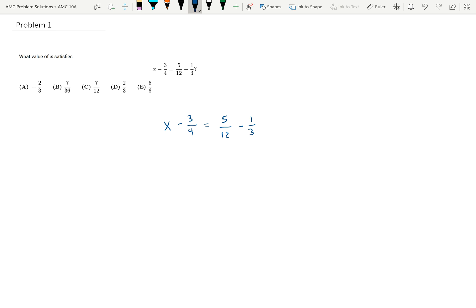I'm going to start by adding 3 fourths to both sides. In doing that, I get 5 twelfths minus 1 third plus 3 fourths. And then in order to add all of those fractions,